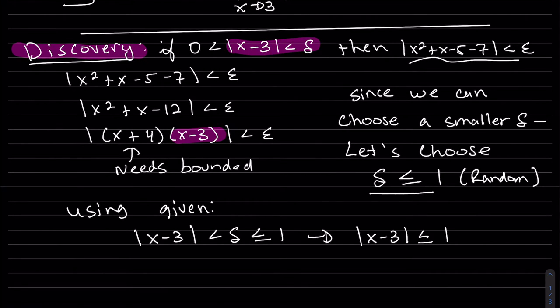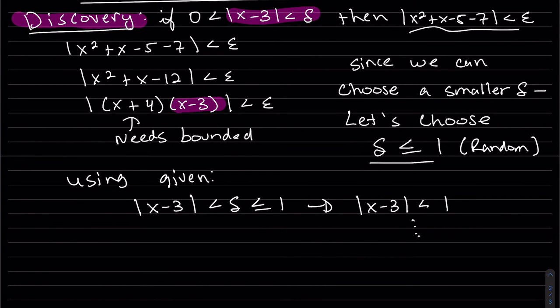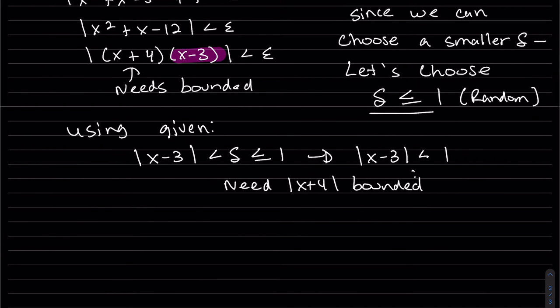Our given is |x - 3| is less than delta, which is less than or equal to 1. So we have, actually it's strictly less than. So again, now we just use algebra to bound |x + 4|.